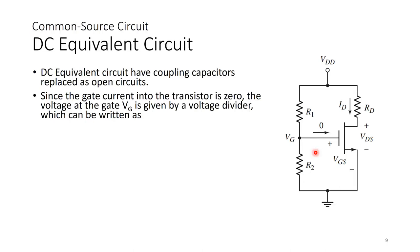The voltage at the gate VG can be found from a voltage divider because if the gate does not draw any current, it is as though R1 and R2 are in series. Because the gate current is zero, we say R1 and R2 can be treated as in series and we can use the voltage divider rule. Using the voltage divider rule for the total voltage drop across VDD, VG equals R2 divided by (R1 plus R2) times VDD.